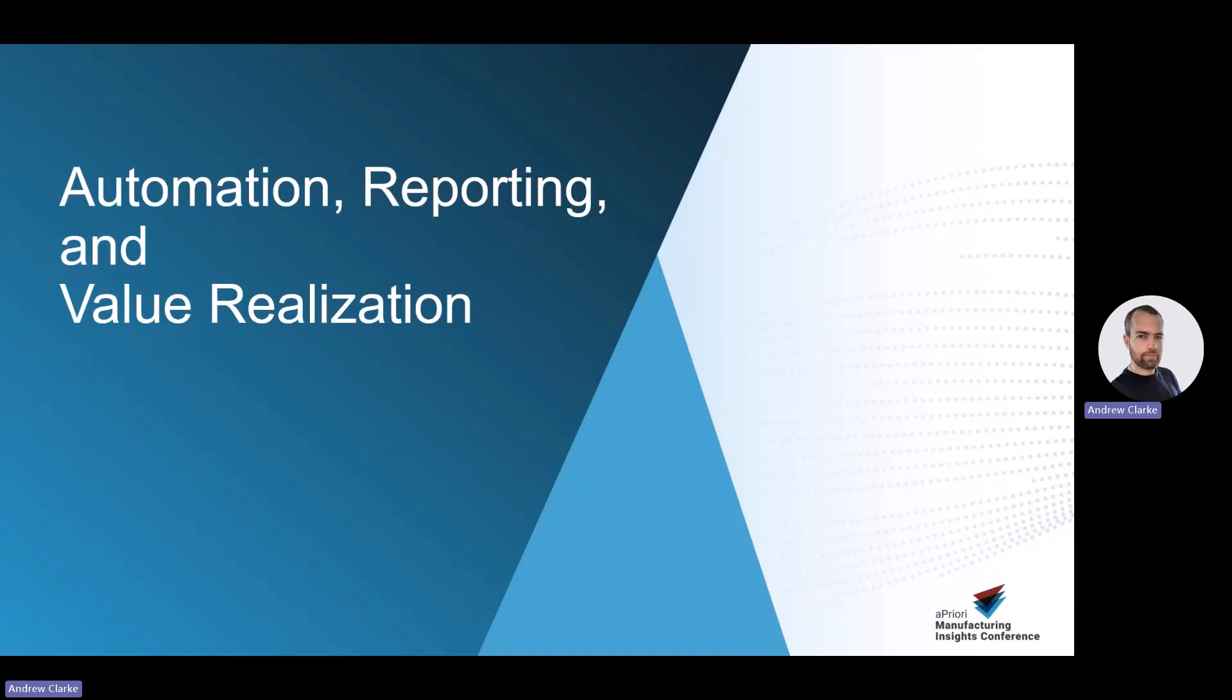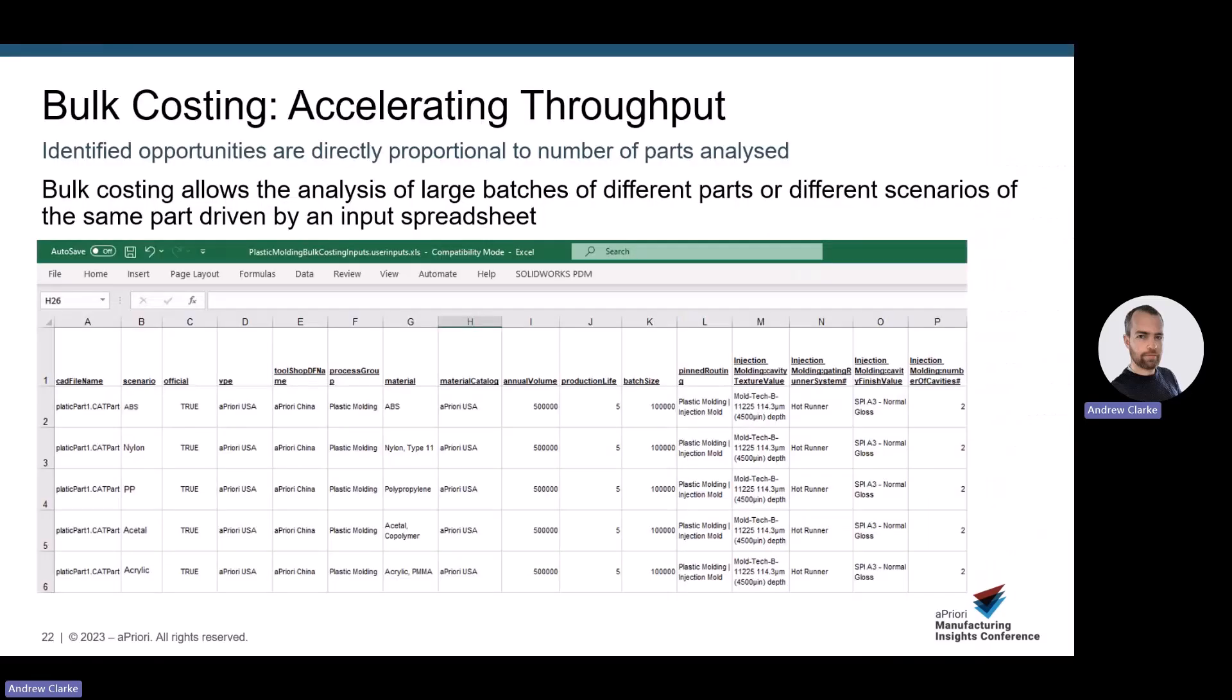Which brings me nicely into our next section, automation, reporting and value realization. We have multiple options for increasing throughput, but in this section, I'm going to concentrate on bulk costing. Bulk costing allows the analysis of large batches of different parts or different scenarios of the same part driven by an input spreadsheet.